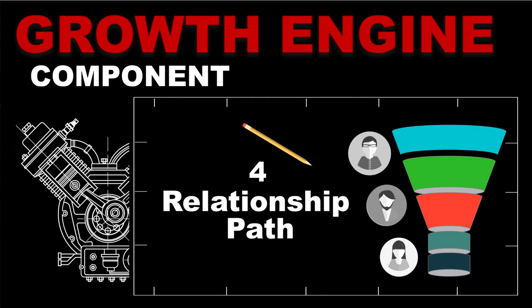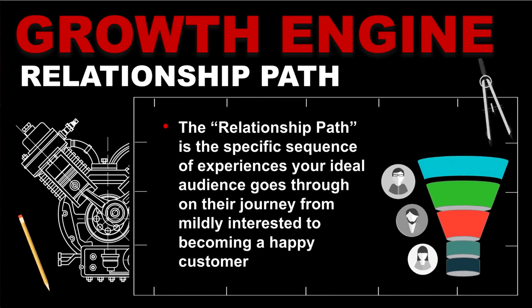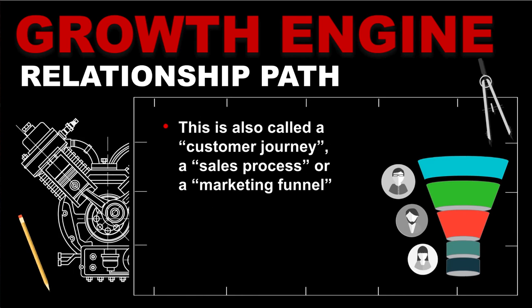Now that you've watched all three of those videos, we're going to dive into the fourth component, which is the relationship path. The relationship path is a specific sequence of experiences your ideal audience goes through on their journey from becoming mildly interested to becoming a happy customer. This is also called a customer journey, a sales process, or a marketing funnel.